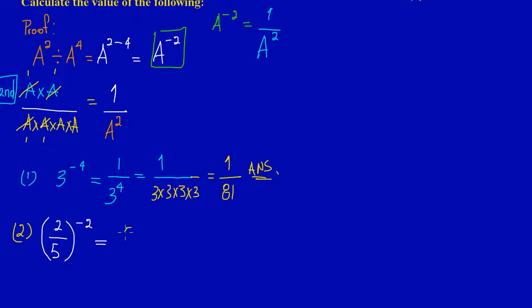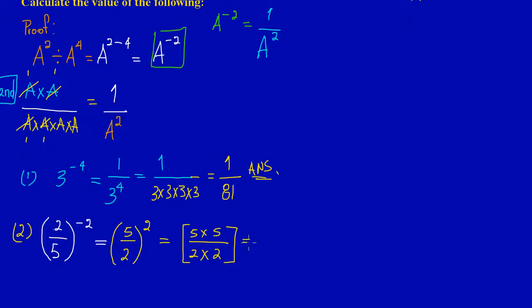Flipping two-fifths gives us five upon two, and the negative two becomes positive two. So this is really five squared upon two squared — five times five is twenty-five, and two times two is four, giving twenty-five over four. Simplified, four into twenty-five goes six times remainder one, so the answer is six and one-quarter.